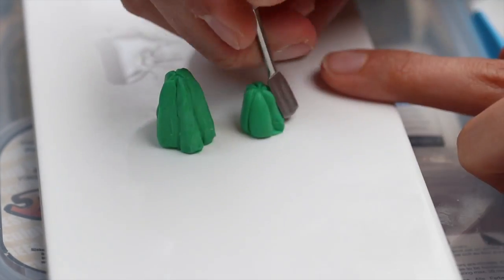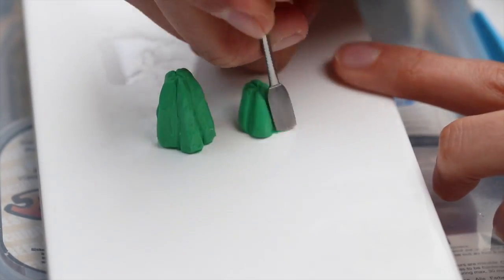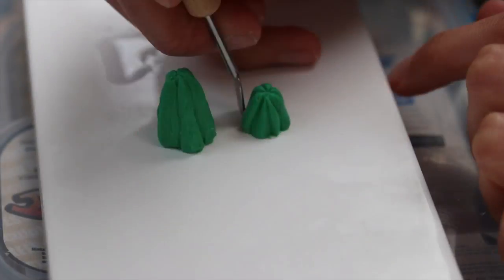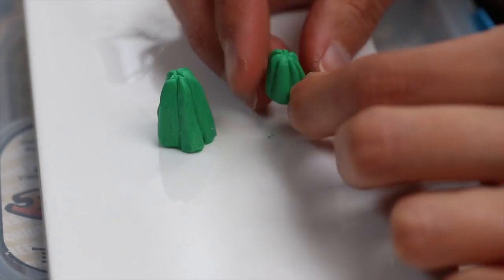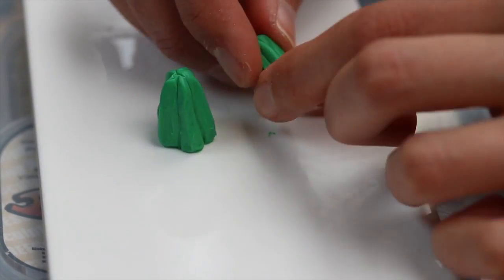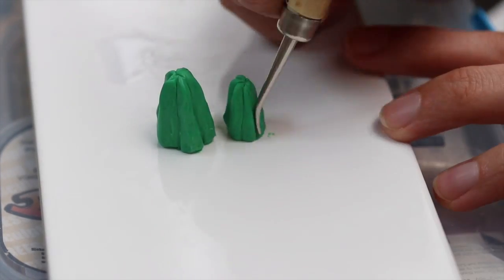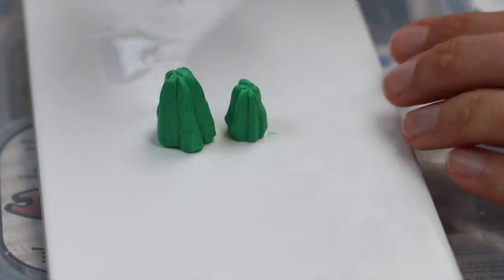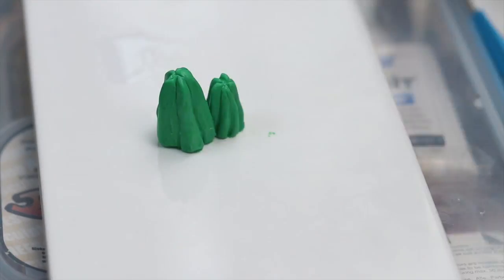I always try to emphasize the importance of using reference pictures but it is crucial to use them to get the result you want. Unless you've been working on cacti for a few years or let's say even a few weeks or a few months you are going to need reference pictures to get the shape just as you want it.